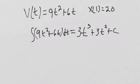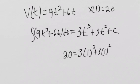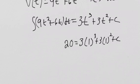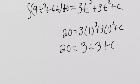Once again, I know that if I plug in x equals 1 for t, the result is going to give me 20. So 20 equals 3 times 1 cubed plus 3 times 1 squared plus c. 20 equals 3 plus 3 plus c, so 20 equals 6 plus c. Then c is 14.